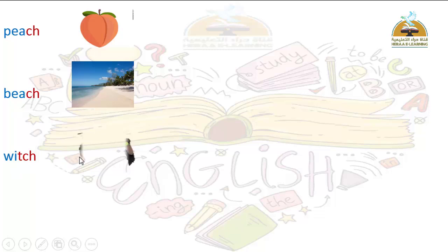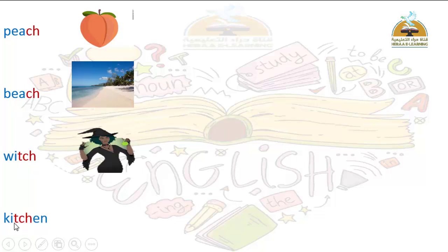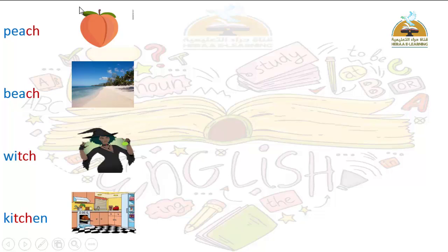More CH words: which — meaning الساحرة (the witch). Kitchen — meaning المطبخ. So our CH words are: cheese, chop, chicken, peach, beach, which, kitchen — all containing the CH sound.